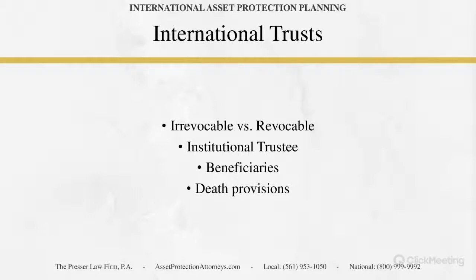When you do an irrevocable trust, generally changes cannot be made by the settlor. But if you build in certain abilities within the trust for other people — maybe a trustee, maybe a trust protector — then certain changes might be able to be made even though it's considered irrevocable. From a tax standpoint, it's going to depend on your ultimate goal from an estate and gift tax perspective, as to whether or not you want whatever you put in there to be considered a completed gift.